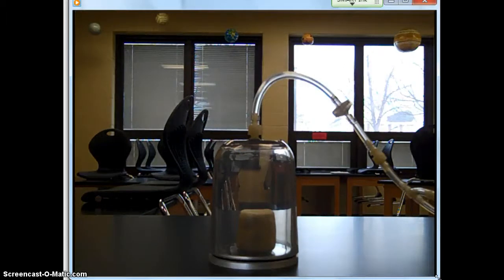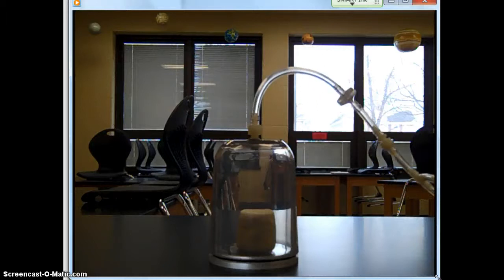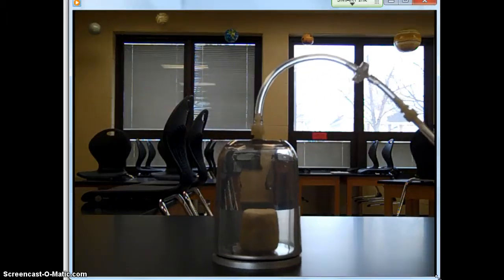We're going to take this big fluffy marshmallow. We're going to set it inside the middle of our jar. And we're going to put the vacuum jar over the top. We'll make sure we've got a good seal. Now, in this case, what we're going to do is we're going to decrease the pressure, which means, according to Boyle's Law, our volume should increase. And we should see the volume of that marshmallow get bigger.